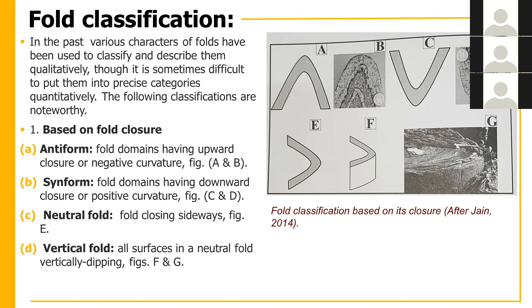The first classification is based on fold closure. If the fold has an upward closure — forming a parabola peak shape — that is an antiform fold. Figures A and B show upward closure, so these are antiform folds.